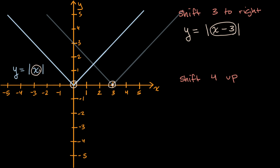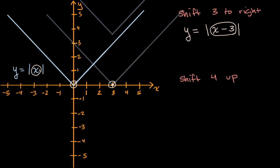But now, let's start from here and shift four up. And shifting four up is, in some ways, a lot more intuitive. So let me shift four up — going up one, two, three, and four. I think I got that right. So now I've shifted four up. And just as a reminder of what we've done: first we shifted three to the right, and now we are shifting four up.